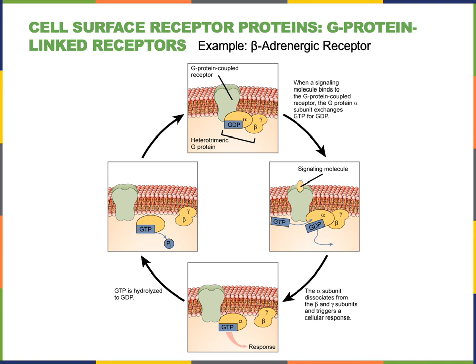The G protein is called a G protein because it's bound to either a guanosine triphosphate (GTP) or a guanosine diphosphate (GDP). When the ligand binds to the G protein-linked receptor, activating the G protein, the G protein will dissociate from the receptor and release its bound GDP. The G protein of a G protein-linked receptor is known as a heterotrimeric G protein because it contains three subunits: an alpha subunit, a beta subunit, and a gamma subunit. The alpha subunit contains the binding site for GDP or GTP. When the G protein becomes activated, it will release GDP and exchange it for GTP.